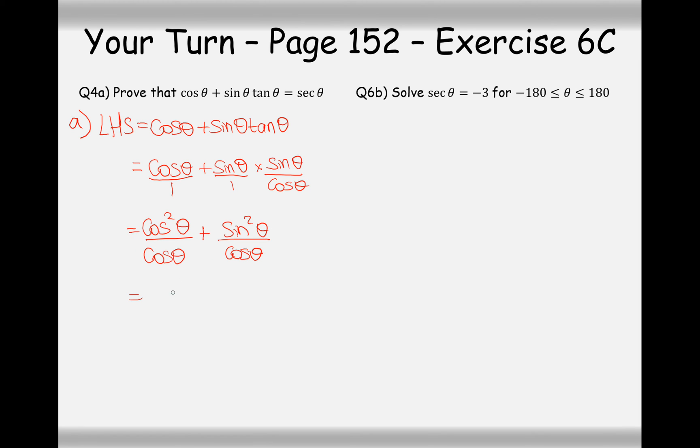So, sine squared plus cos squared equals one over cos theta. And I know that one over cos theta is sec theta. So, my answer here is sec theta. And the next thing I'll write is equals RHS with a little box down below just to say that I've proved it.